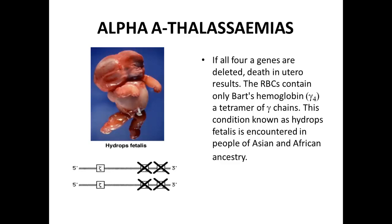The investigations for alpha thalassemias are similar to beta thalassemia. In alpha thalassemia silent carrier state, the blood complete picture will be normal and no electrophoresis or skull X-ray is needed, with no extramedullary hematopoiesis. In alpha thalassemia trait, the patient will be asymptomatic but blood CP will show mild microcytosis and hypochromia.